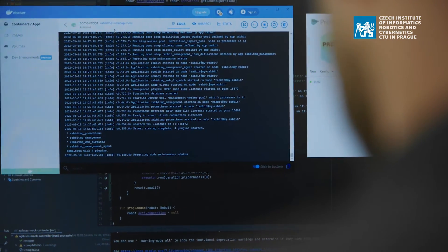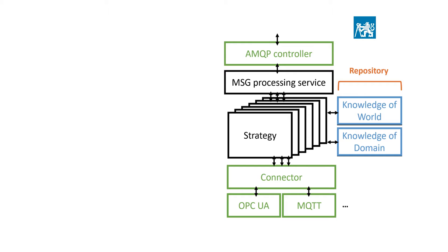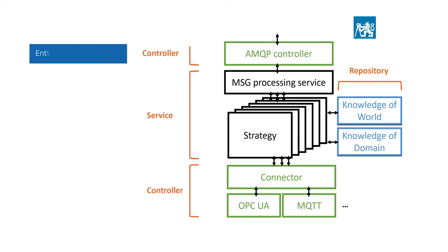Communication and negotiation are based on the logic that lies in the agent's core. The core is based on the enterprise MVC scheme, where through the AMQP controller the agent sends, receives, and processes messages, which are handled asynchronously by the state machine called strategies.